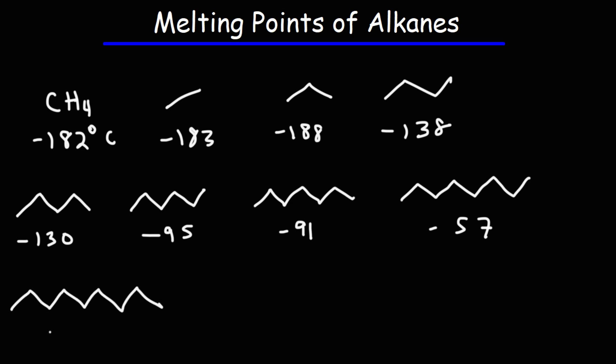Now for nonane, which has nine carbons, the melting point is negative 51. And for decane, negative 30.